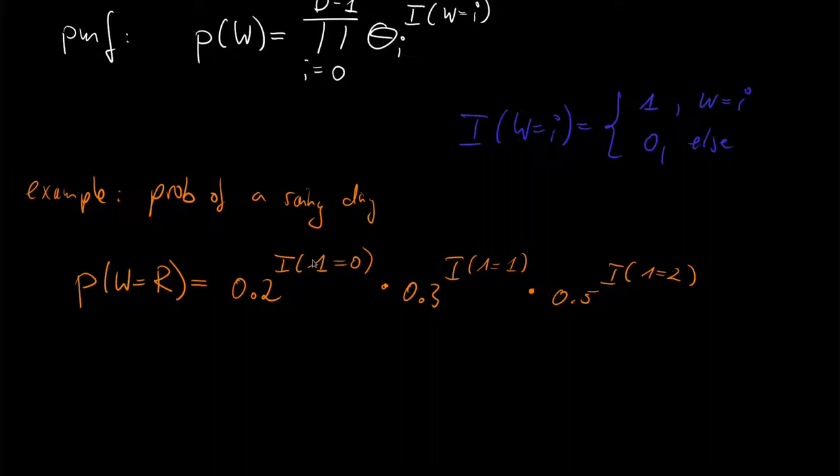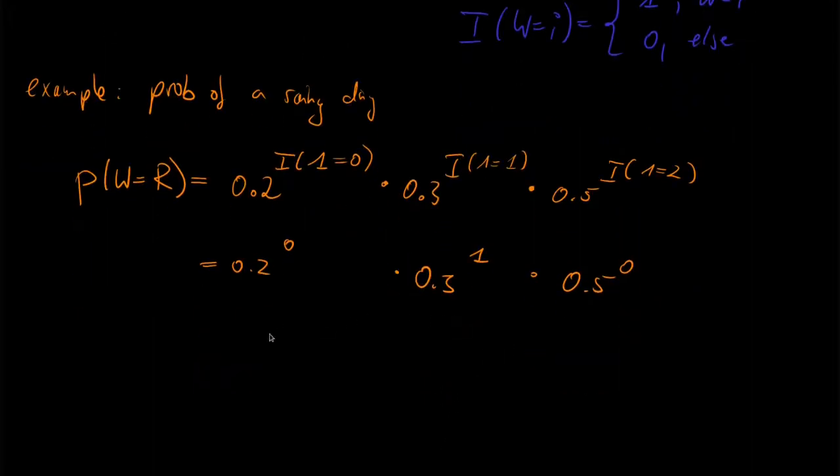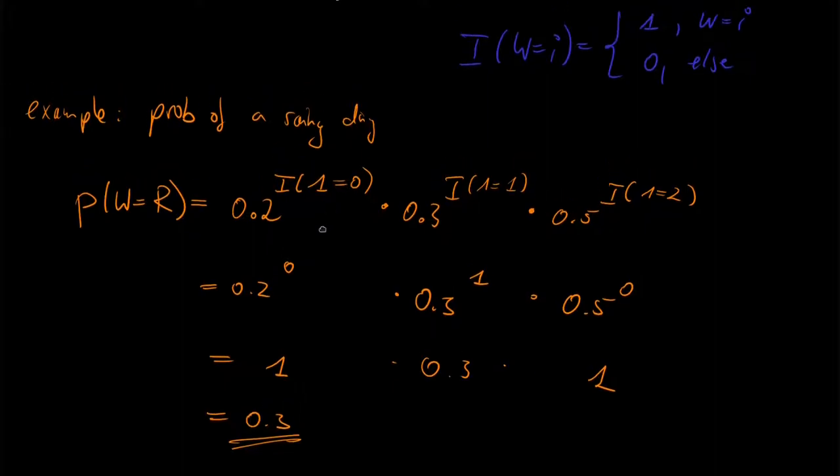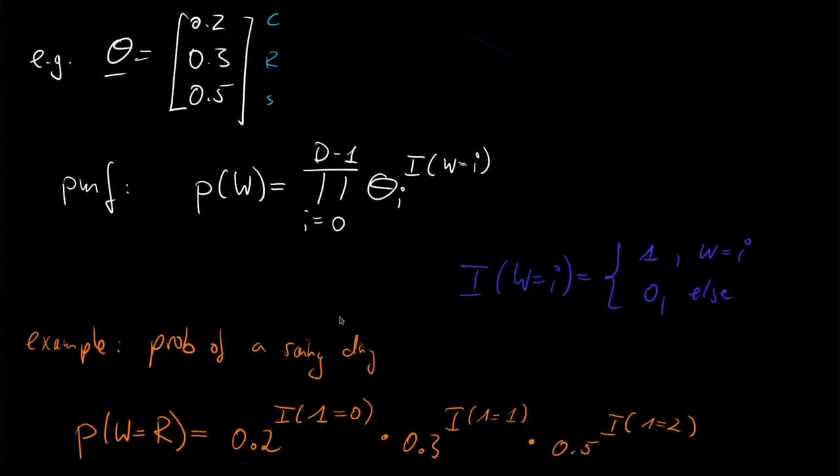And surely, here in this case, in the outer case, the indicator is 0. So we get 0.2 raised to the 0, times 0.3 raised to the 1, times 0.5 raised to the 0 is equal to, well, anything raised to the 0 is 1. So we get 1 here, and we have a 0.3, and we get out a 0.3. And this is exactly the probability of a rainy day.